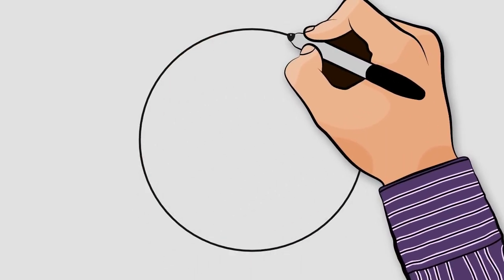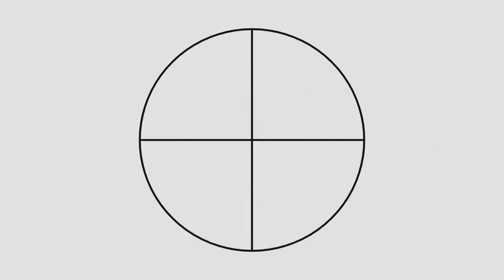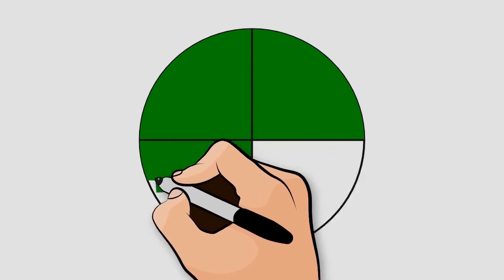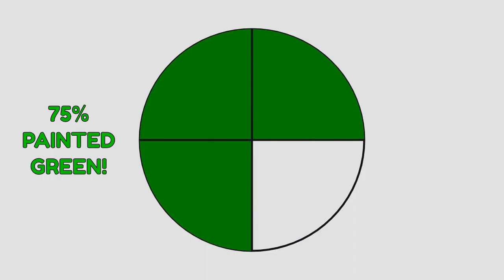Let's try another example. Imagine you draw a circle, and you want to paint 3 quarters of this circle green and 1 quarter black. What you have to do is divide the circle into 4 equal parts. If you want to paint 3 quarters green, you paint 3 parts of 4. And if you want to paint 1 quarter black, you paint 1 part of 4 black. This is how it would look.